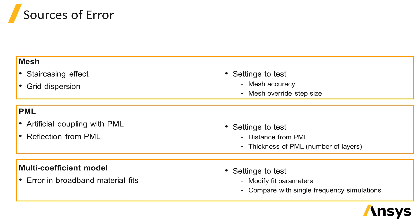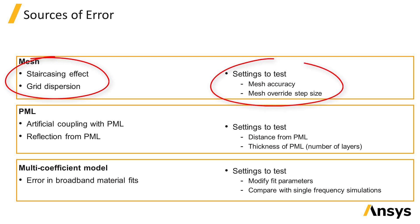The discretization of the simulation volume in space by the simulation mesh can introduce errors since curved surfaces of the structure will not be represented exactly. There can also be some monitor interpolation error introduced when field components are interpolated from the locations where they're calculated on the Yee cell. There's also some discrepancy between the simulated speed of light in a medium compared to the ideal case due to the discrete mesh, which is referred to as grid dispersion. All of these errors are reduced when a finer mesh with smaller mesh step size is used.